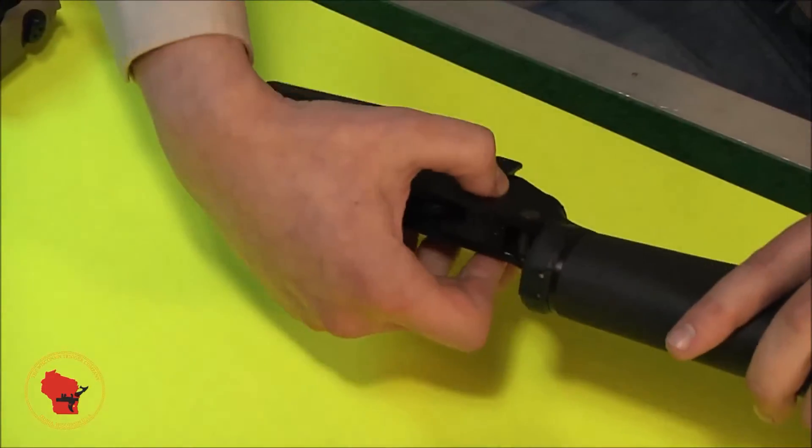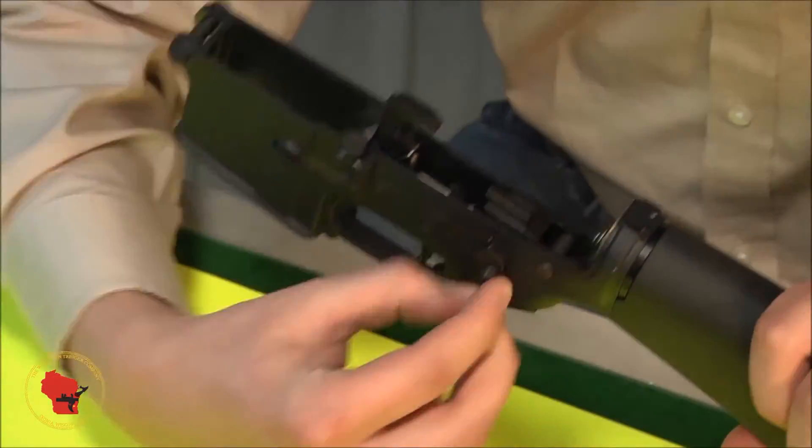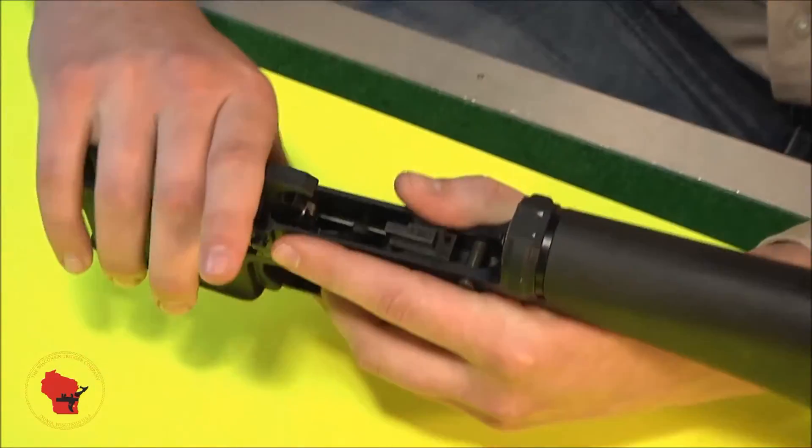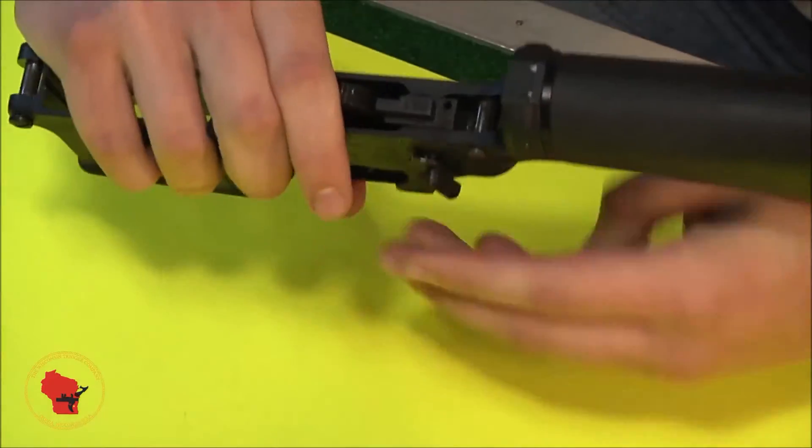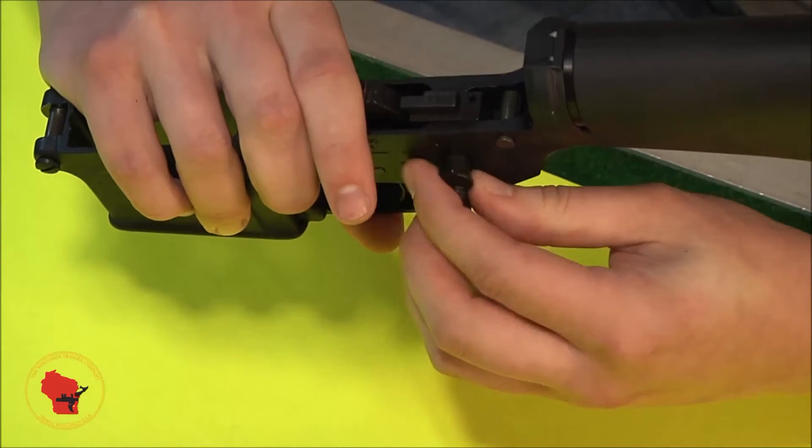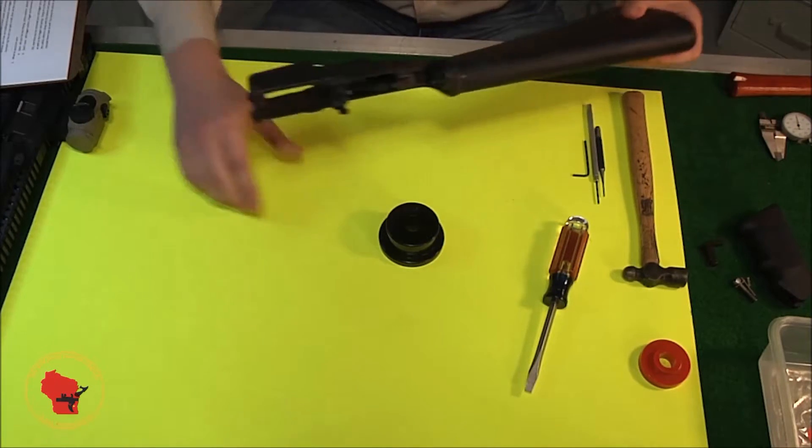Now you're gonna be able to slide your safety selector switch out as long as the hammer is cocked. It won't come out if it's not cocked. So go ahead and pull that out. Set that off to the side.